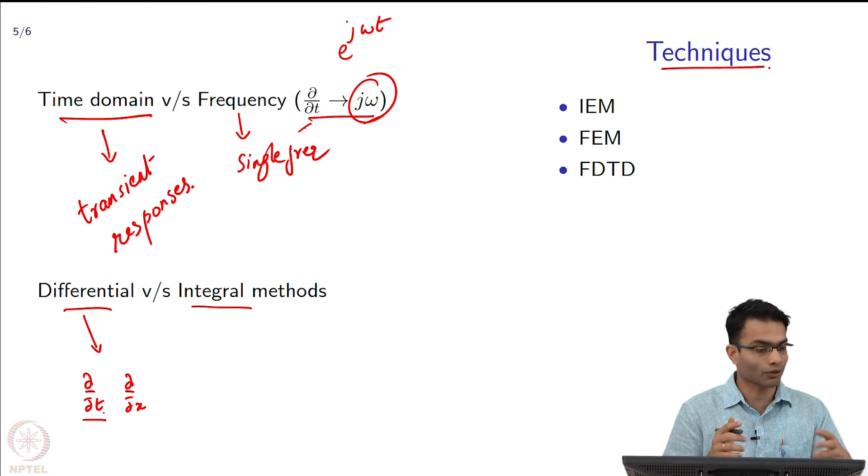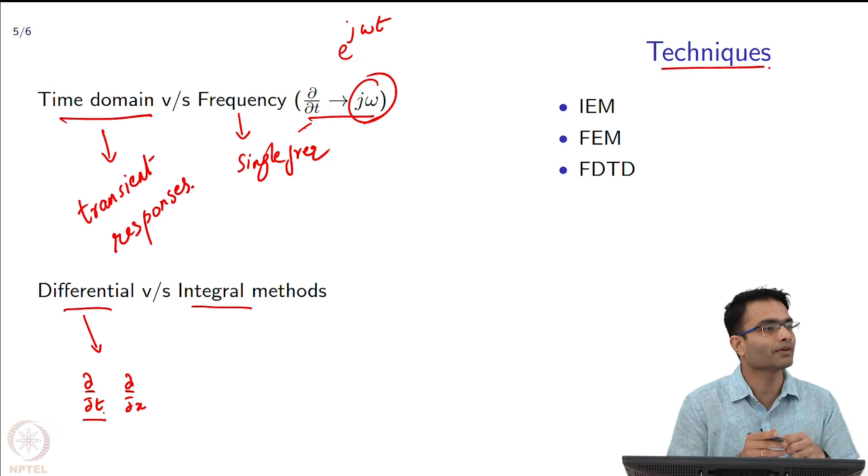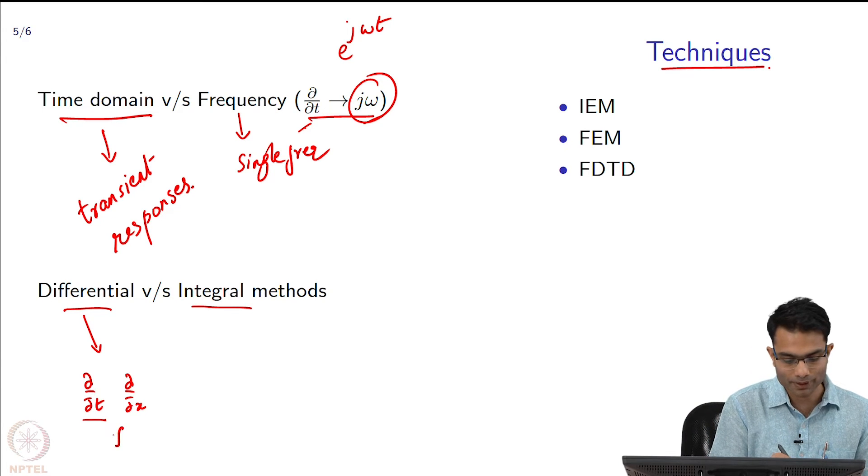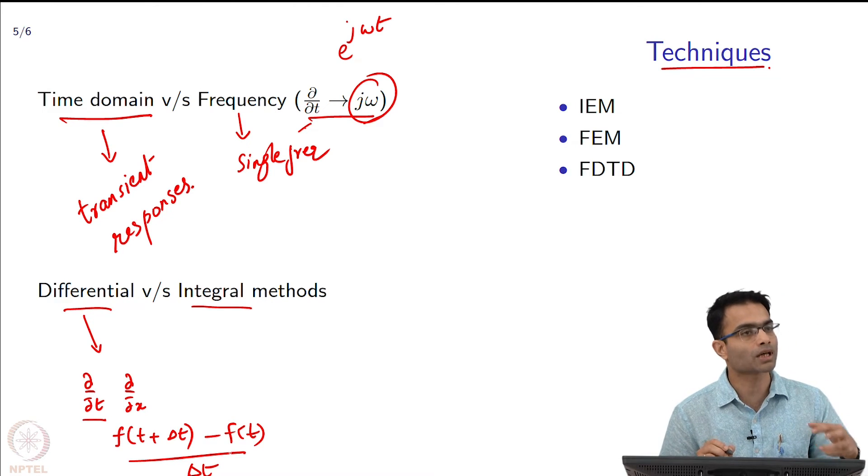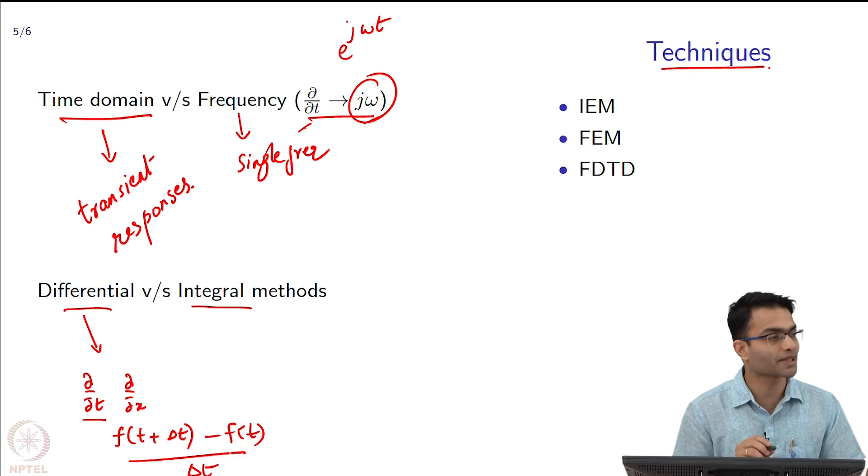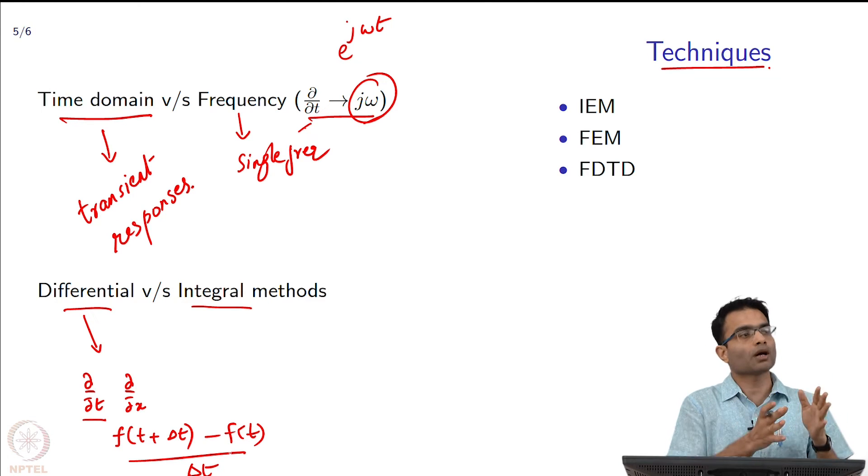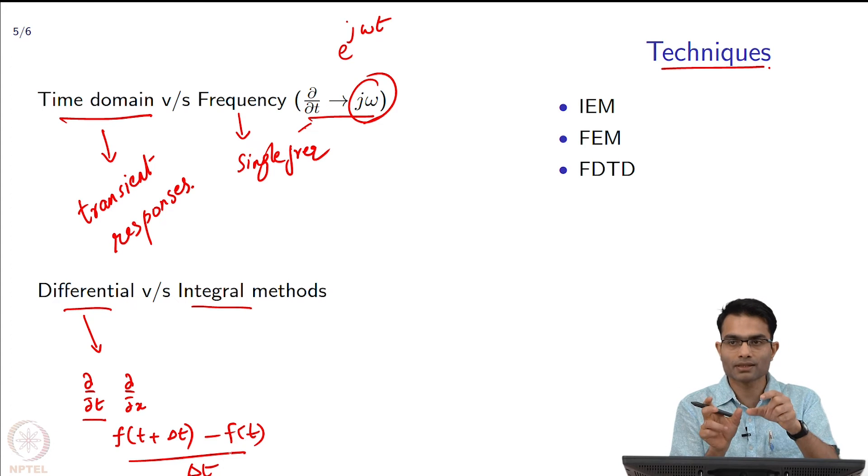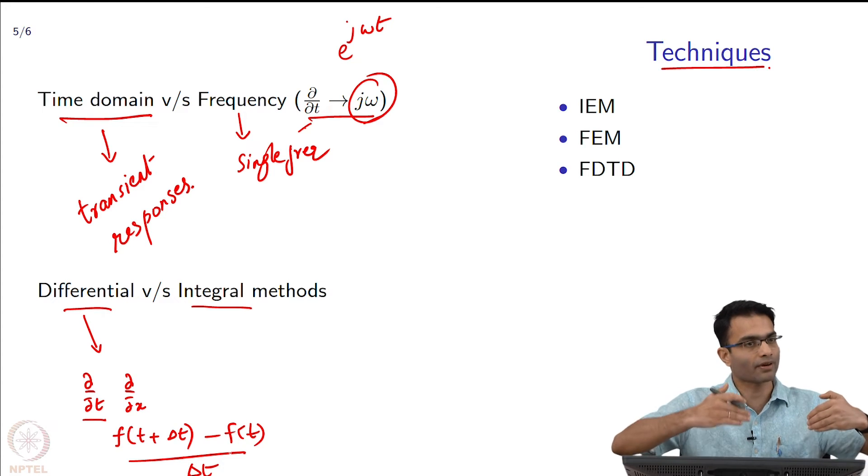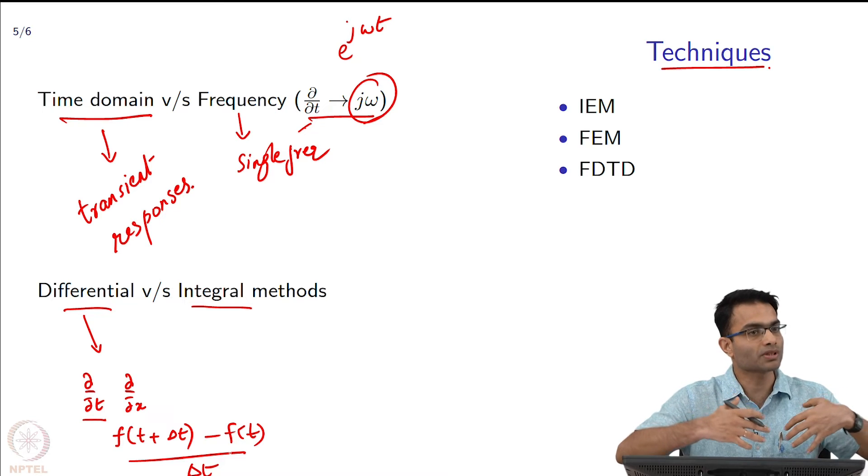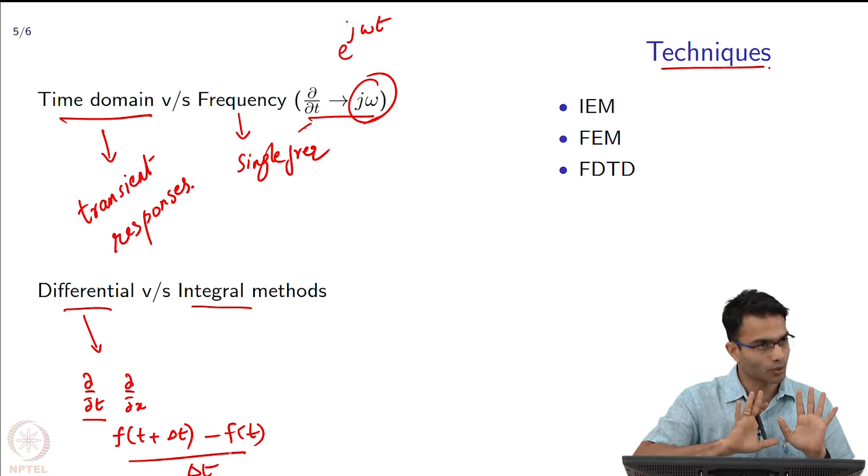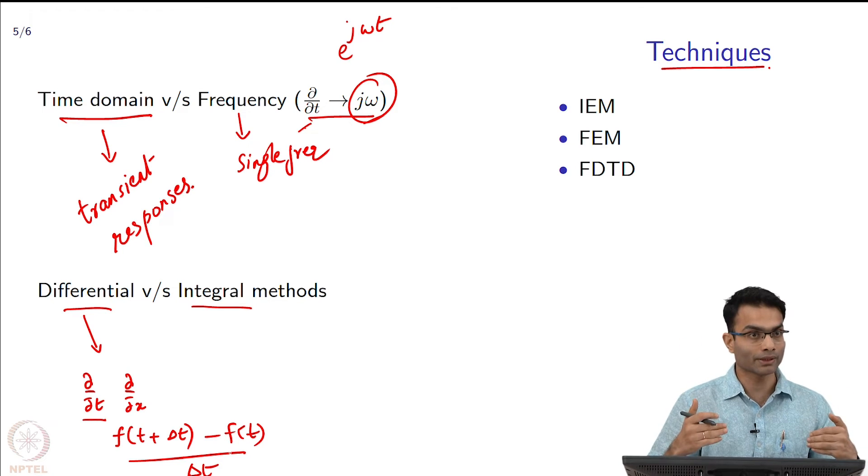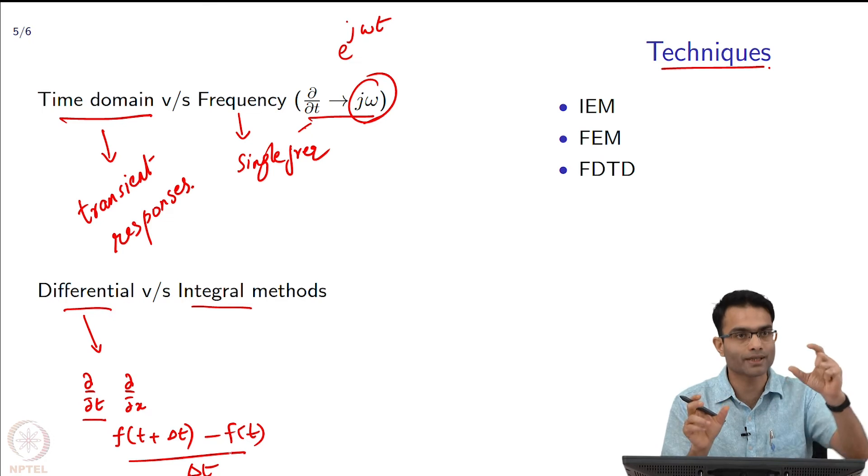Because I am solving it on the computer, I cannot calculate these derivatives analytically. I will represent a derivative in time by something like f of t plus delta t minus f of t divided by delta t - finite differences, that is how I will implement a derivative, similarly for the spatial derivative. When I do this chopping up of space and time into discrete things, what happens is that as a wave travels on a discrete grid it begins to disperse.